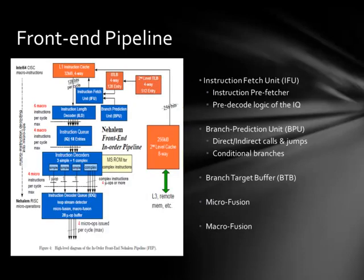Starting with the front end pipeline, it consists of a few major components. The first is the instruction fetch unit, which consists of the instruction translation lookaside buffer, an instruction prefetcher, the L1 instruction cache, and the pre-decode logic of the instruction queue. The branch prediction unit allows the processor to begin fetching and processing instructions before the outcome of a branch instruction is determined. For microprocessors with long pipelines, successful branch prediction allows the processor to fetch and execute speculative instructions over the predicted path without stalling the pipeline.